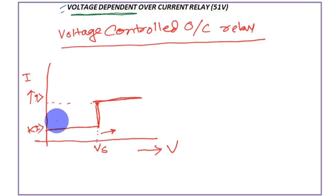When a fault happens away from the generator, the voltage at the generator terminal will not fall, so it acts as a normal overcurrent protection with a higher pickup current. But if the fault is near the generator, the terminal voltage falls below Vs, reducing the pickup current to Ki. This lower pickup current triggers the relay to operate faster. That is the operating principle of the voltage controlled overcurrent relay.